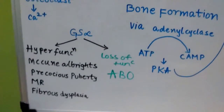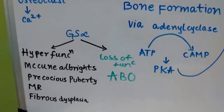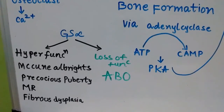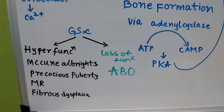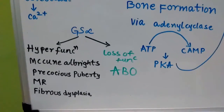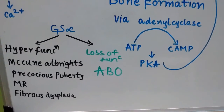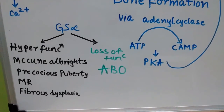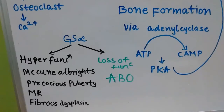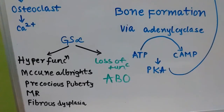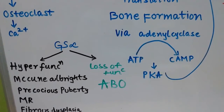When a GSα hyperfunctioning mutation is present, there will be McCune-Albright syndrome. The features of McCune-Albright syndrome are precocious puberty, mental retardation, and polyostotic fibrous dysplasia — please remember it is polyostotic, not monoostotic. So, GSα hyperfunctioning → McCune-Albright syndrome. GSα loss of function → Albright's osteodystrophy.